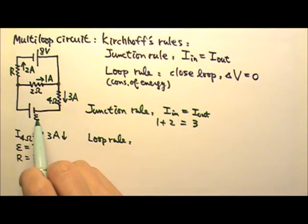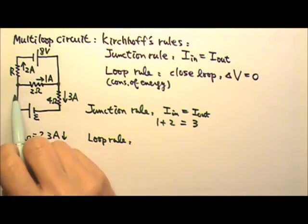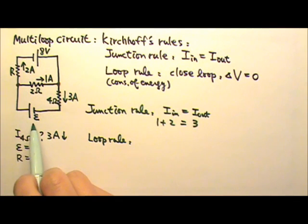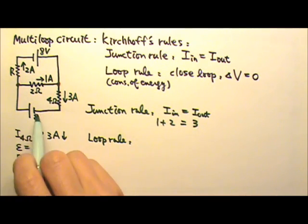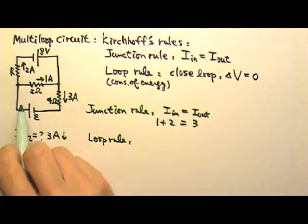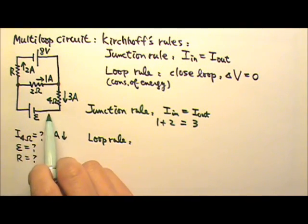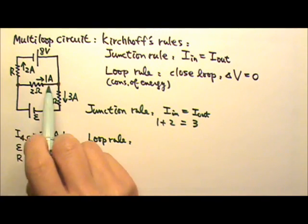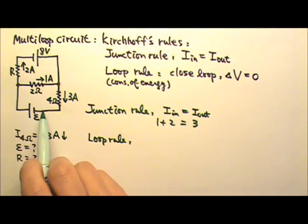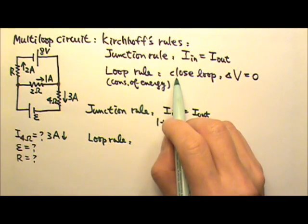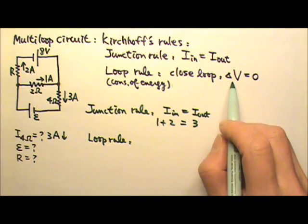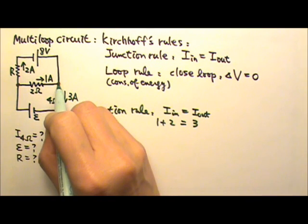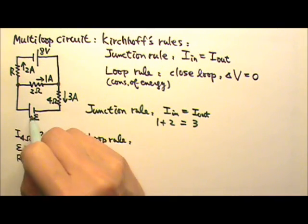To find the EMF, I have to use either the lower loop or the big loop so the EMF is involved. I'm going to use the lower loop. It doesn't matter where you start, and it doesn't matter whether you go clockwise or counterclockwise. Either way is fine — as long as we go around a closed loop, the delta V should be zero. I'm going to start from that junction point and go clockwise.